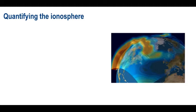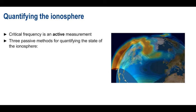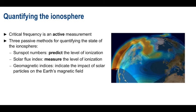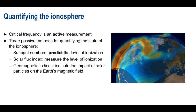Critical frequency is one way of quantifying the state of the ionosphere, but this is an active test. We transmit signals and measure the return signals. In addition to critical frequency, there are three common passive methods that are used to quantify the state of the ionosphere. The first of these is sunspot number, which can be used to predict the level of atmospheric ionization. The second is the solar flux index, which is an actual measurement of ionization. There are also two geomagnetic indices, the A index and the K index, which give an indication of the impact of solar particles on the Earth's magnetic field. Taken together, these quantities provide a good indication of the current state of the ionosphere, and can be used to predict HF propagation. Let's take a look at each of these three quantities in a bit more detail.